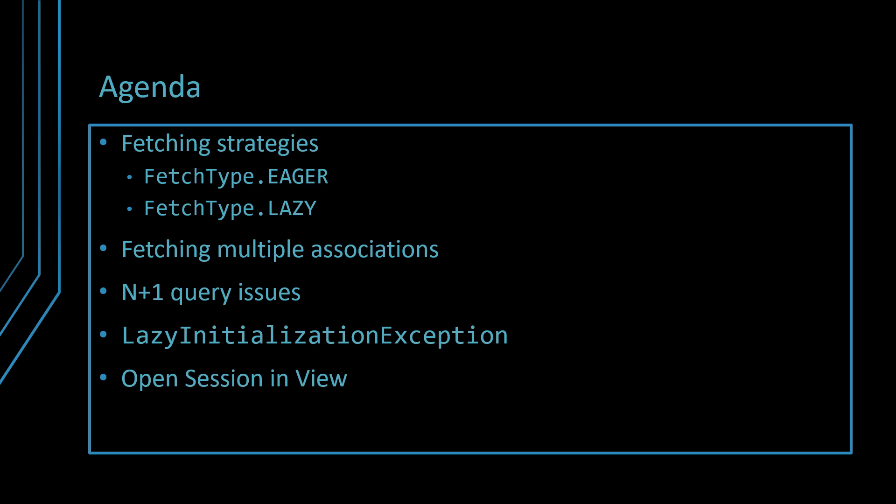First, we're going to explain how the fetch type eager and fetch type lazy strategies work when using JPA Hibernate. Afterward, we will see how we can fetch multiple associations, no matter if those are many-to-one, one-to-one, or collections. Next, we will discuss the N+1 query issue and see what's the best way to prevent it. In the end, we will cover the lazy initialization exception topic and see why we should avoid the open session in view anti-pattern.